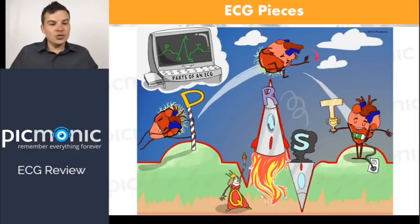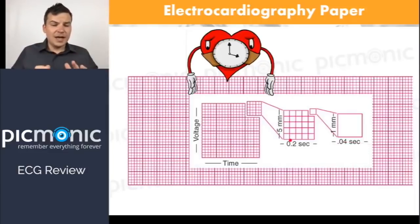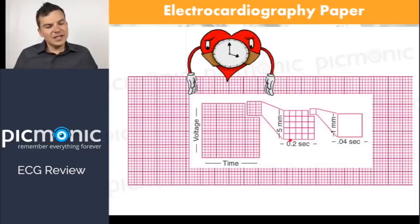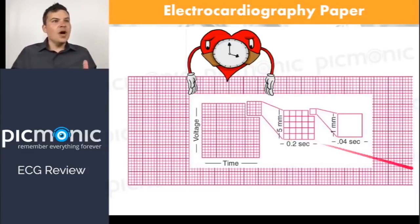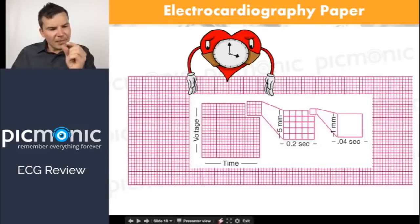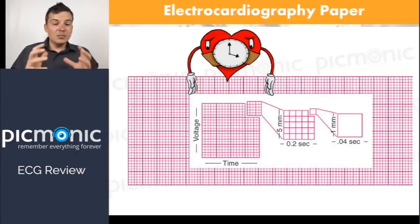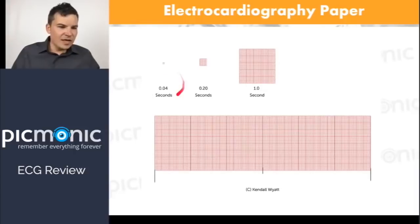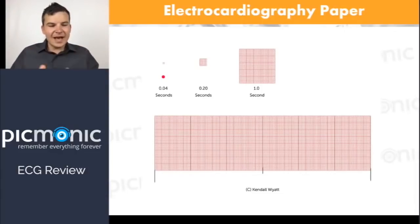The Picmonic covers atrial depolarization, ventricular depolarization, and repolarization of the ventricles. The ECG paper itself is super important to understand in order to calculate heart rate. Each box breaks into smaller boxes down to the tiniest little box. You need to remember that one tiny box equals 0.04 seconds. If you memorize that, you can build off of it to understand all the time measurements on the ECG.